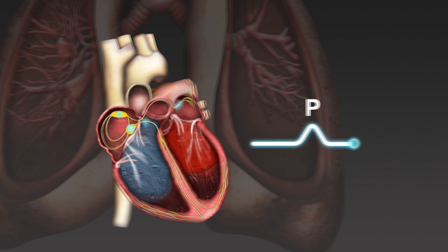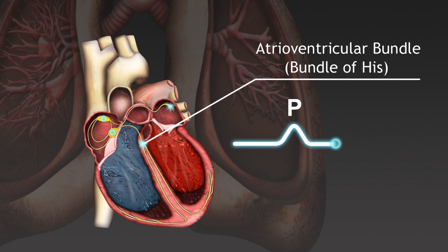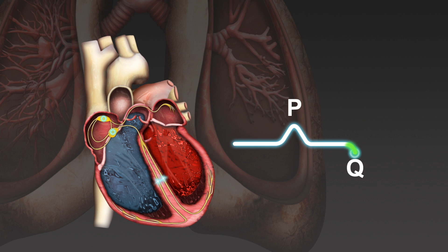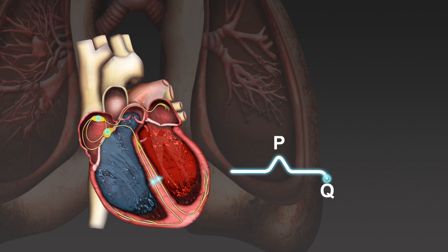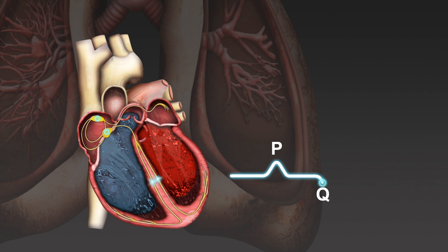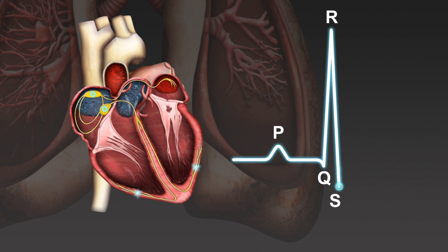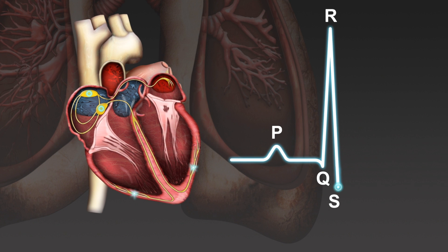As the impulse travels from the AV node to the bundle of His and along the upper part of the septum, the Q wave is produced. The passage of the electrical signal through the ventricles produces a large spike, called the QRS complex. The QRS complex is much larger than the P wave because the ventricles are much larger than the atria and so produce more electrical activity. Most of the QRS complex represents depolarisation of the left ventricle, which has much greater mass than the right.